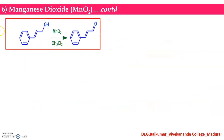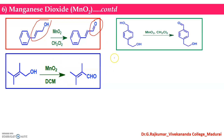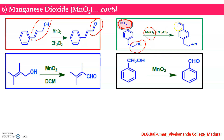MnO2 is selectively used for the oxidation of allylic or benzylic hydroxyl groups and will not affect other hydroxyl groups. Allylic hydroxyl groups can be oxidized into aldehydes. When there are two hydroxyl groups, manganese dioxide selectively oxidizes only the benzylic one — CH2OH is oxidized into CHO while the other group is not affected. Similarly, benzyl alcohol gives benzaldehyde as the product in the presence of manganese dioxide.